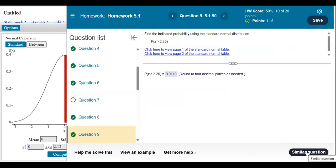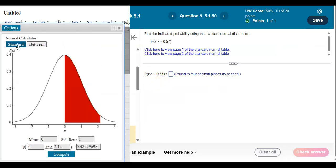Alright, let's do another one. That's my question. Alright, so this one is asking us for the area of the probability that z is greater than negative 0.57. I'll go back to StatCrunch. I'm not doing a between. I just have one z-score, so I'll go back to standard.